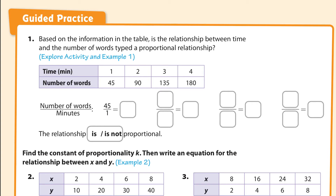All right, here we go with lesson 4.2, Guided Practice. We're talking about rates of change. Let's start with the first question: based on the information in the table, is the relationship between time and the number of words typed a proportional relationship?